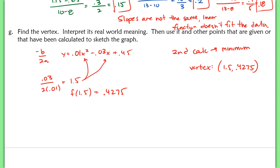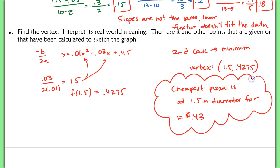All right, so basically what this means is that you can get your cheapest pizza. So the cheapest pizza is when you order a 1.5 inch diameter for about 43 cents. So I don't know who would order a 1.5 inch pizza, but that's essentially what that vertex is showing. It's the minimum value that you would pay to order a pizza.